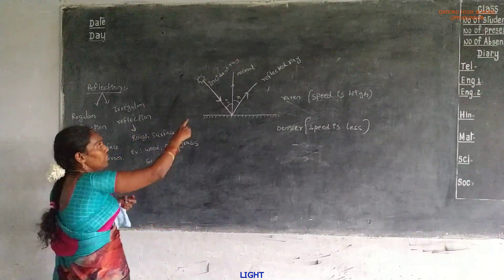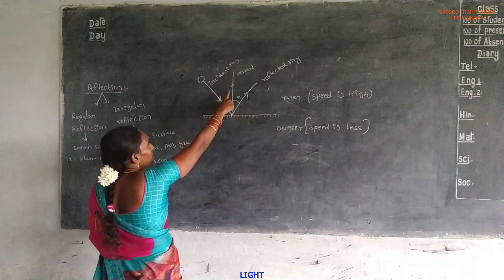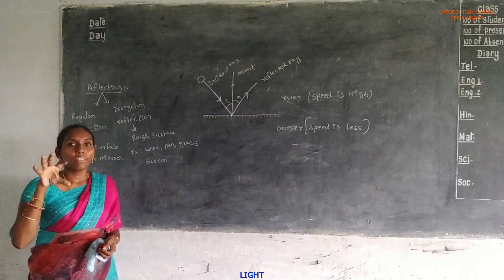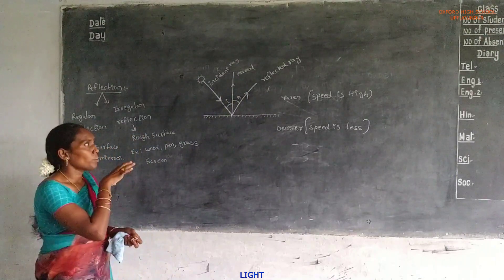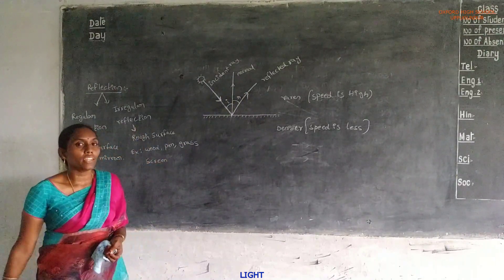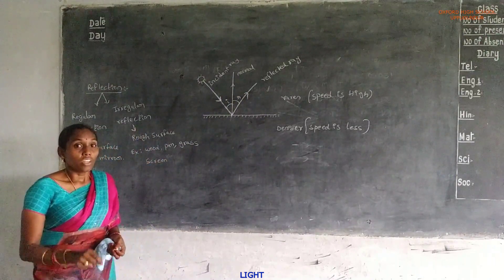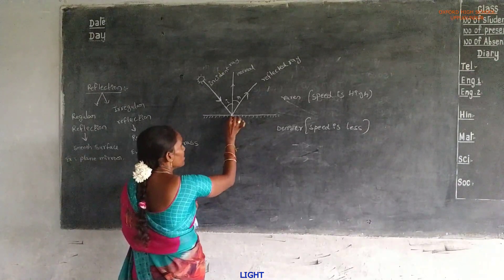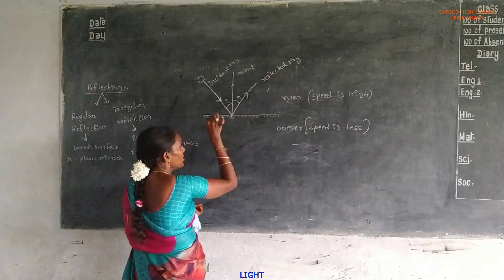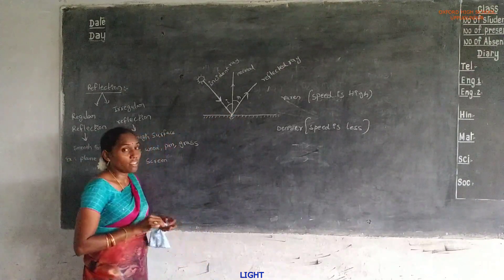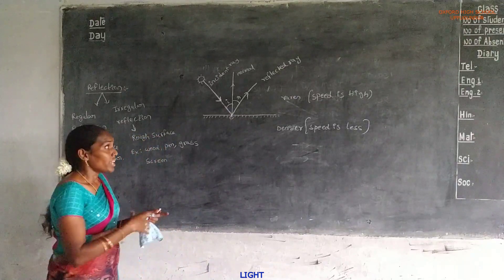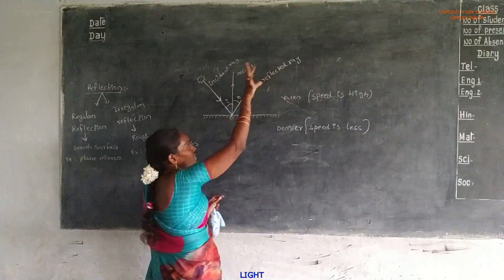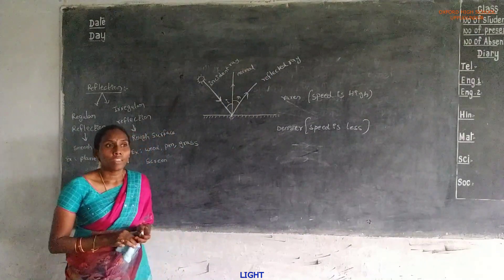Incident ray, normal, and the reflected ray. Those rays which are incident on the plane surface are called incident rays. Draw the perpendicular line from the point of incidence — that perpendicular is called the normal. The ray which is reflected from the surface is called the reflected ray.